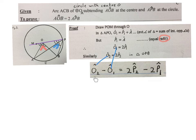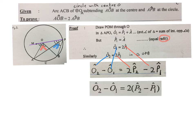So O2 minus O1 will be the same as two times P2 minus two times P1. Then we factorize the two out, then we have our final proof. Angle AOB is equal to two times angle APB.